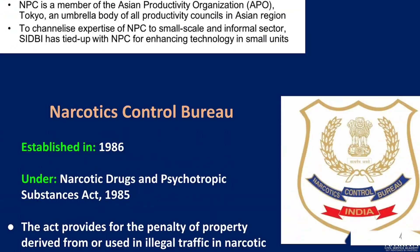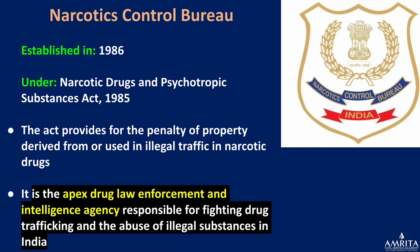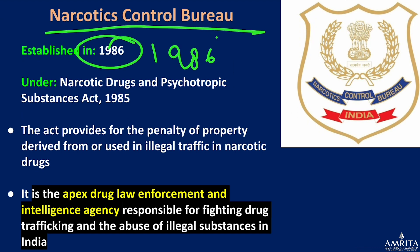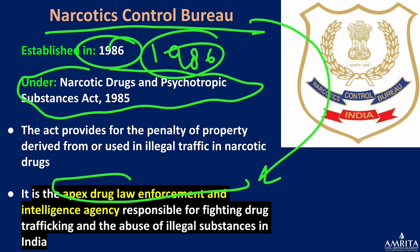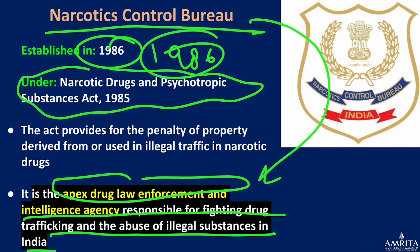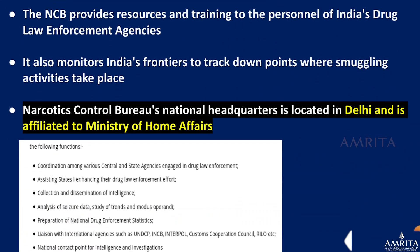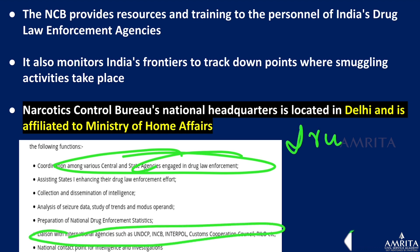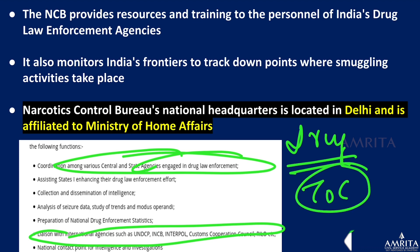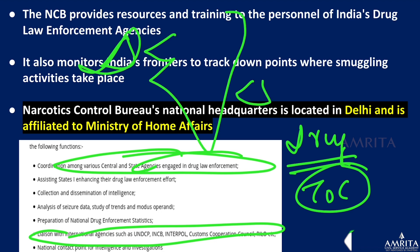The Narcotics Control Bureau (NCB) was established in 1986 under the Narcotic Drugs and Psychotropic Substances Act. It is the apex drug law enforcement and intelligence agency responsible for fighting drug trafficking and abuse of illegal substances in India. It coordinates with different state agencies and international agencies, as drug crime is a transnational organized crime. The NCB is under the Ministry of Home Affairs.